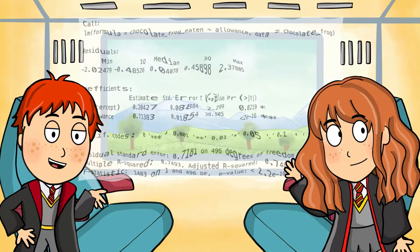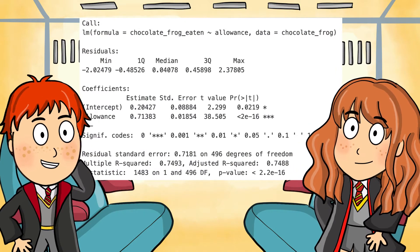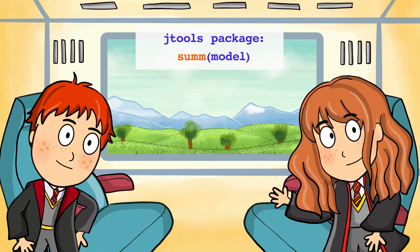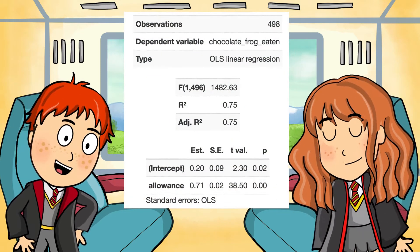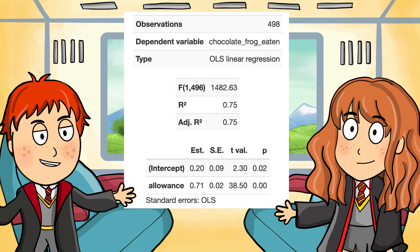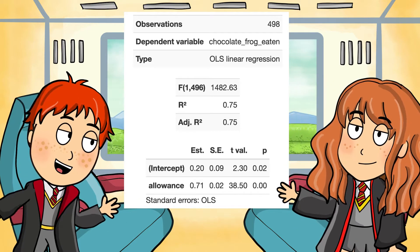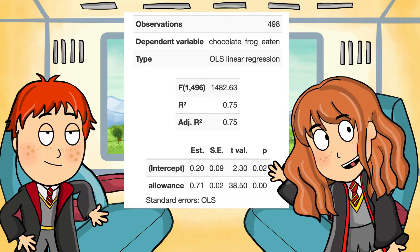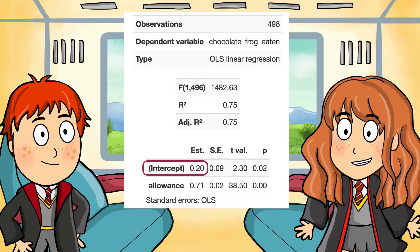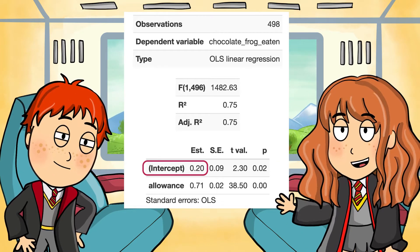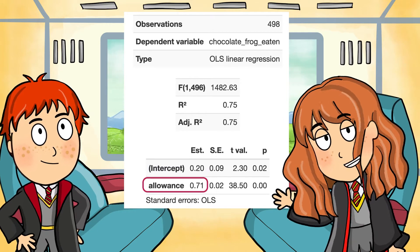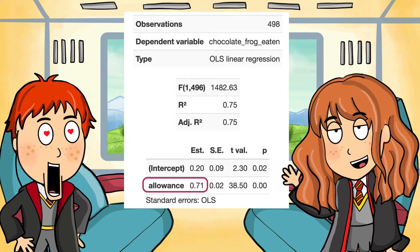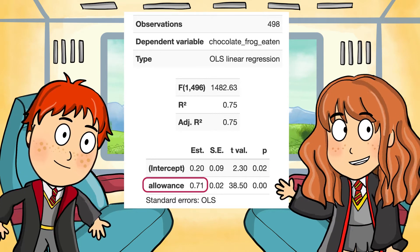Here it is. It doesn't make much sense to me. What did the results say, Hermione? Let me clean it up using the sum function from the JTools package. Here you go. This looks much better now. So, we have the dependent variable — which is the amount of chocolate frogs eaten — the R-squared value, p-value, and more. The y-intercept value is 0.2, and the estimated effect of weekly allowance on the amount of chocolate frogs eaten is 0.71. This means that the average number of chocolate frogs eaten increases by 0.71 for every galleon of allowance the student receives.